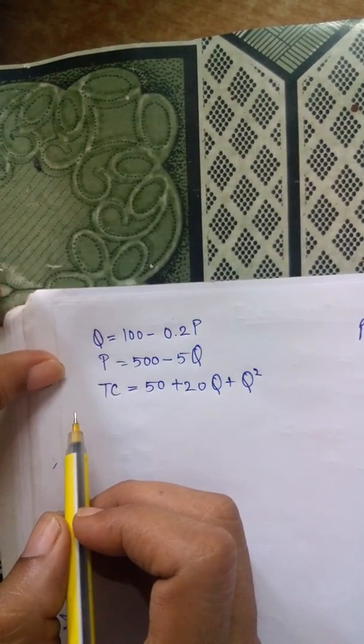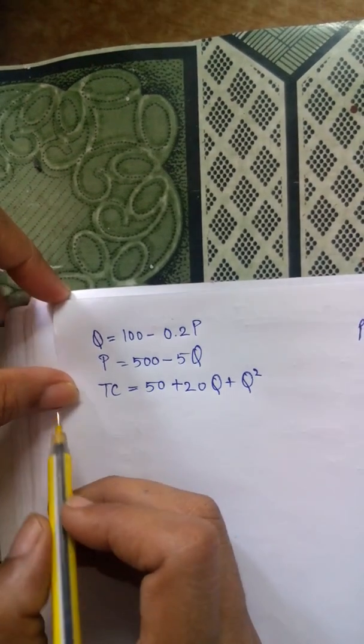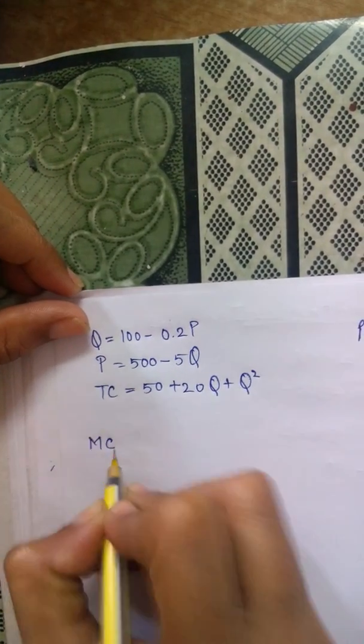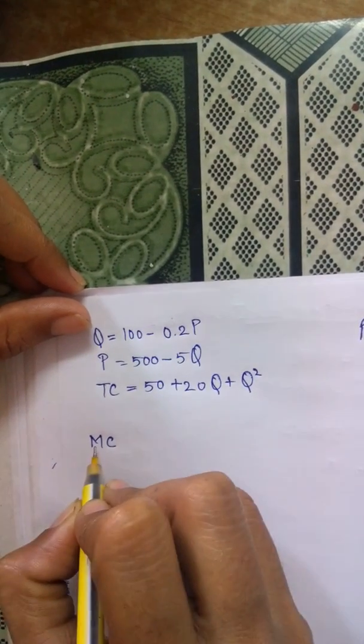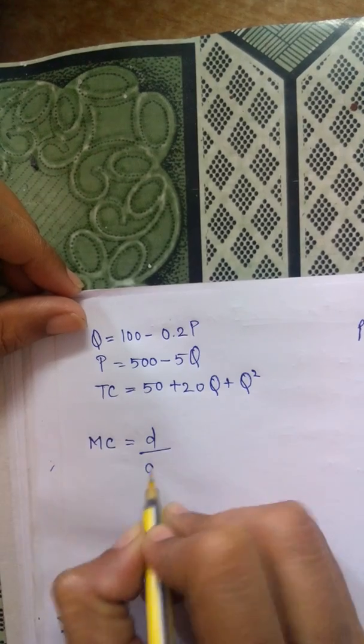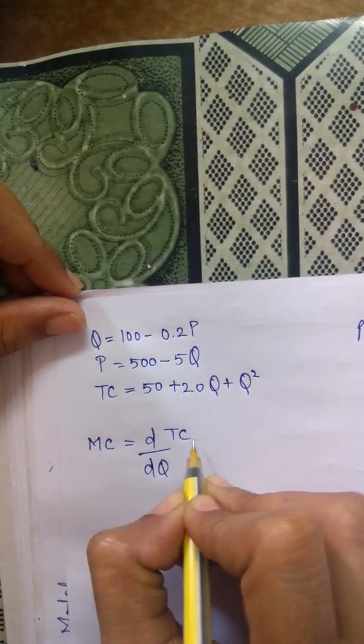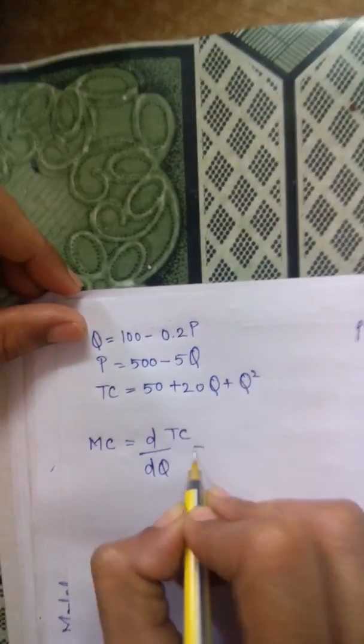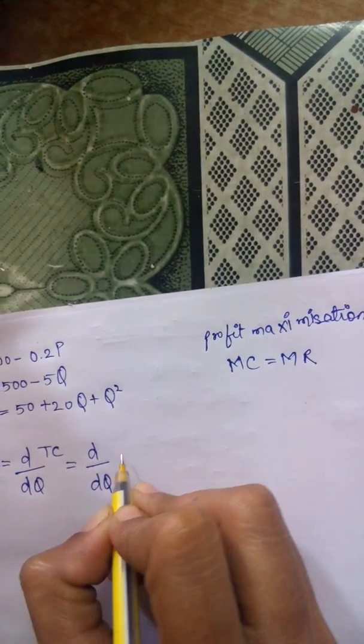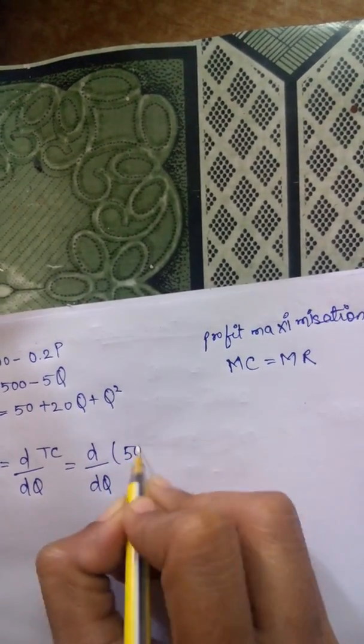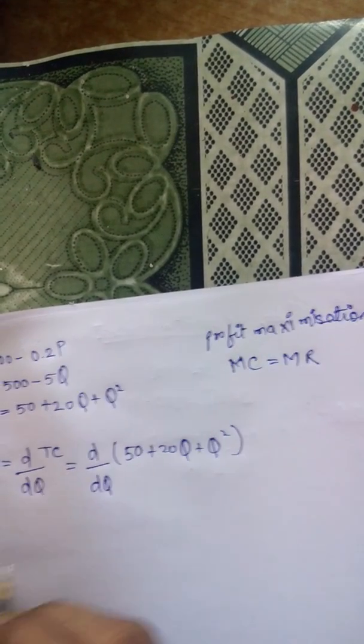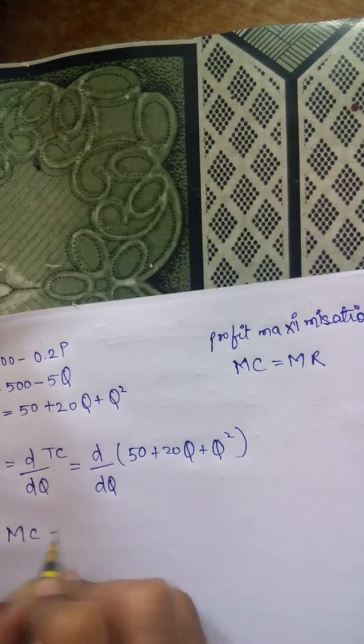Now we will try to find MC first. To find MC, we take the help of TC. As we know, to find MC we have to differentiate the total cost function. That means we have to differentiate 50 plus 20Q plus Q squared.